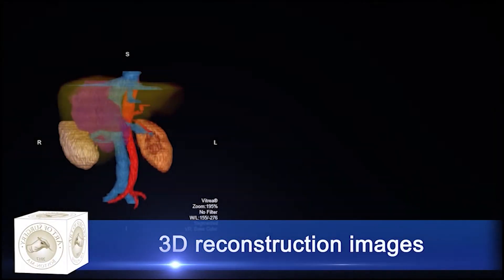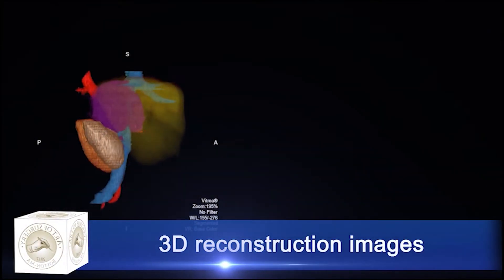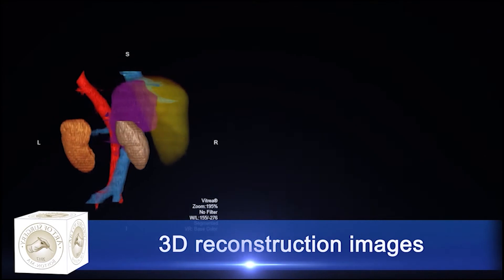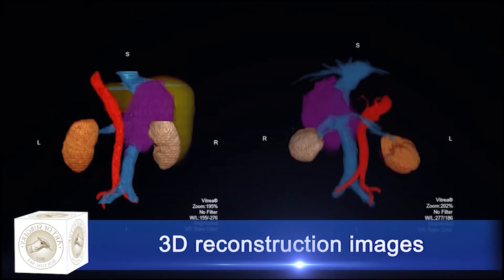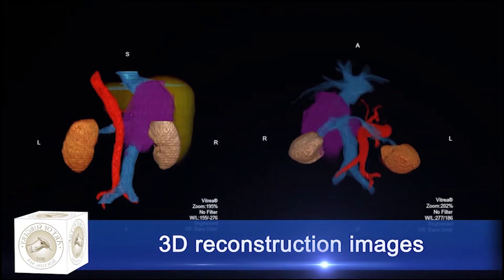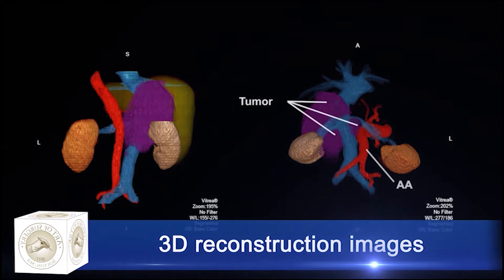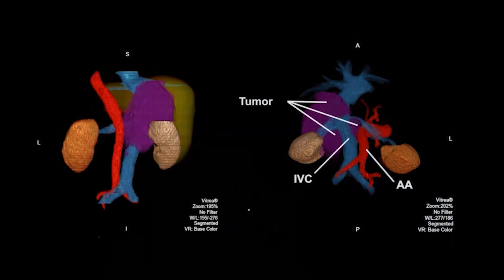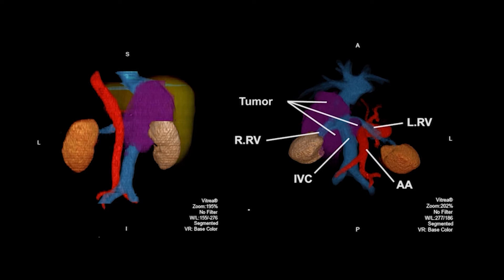The 3D reconstruction was performed and demonstrated the relationship between the tumor, right and left kidney veins, IVC, aorta, and liver. Due to the proximity of the tumor to all those vital structures, surgeons used the 3D model and designed four surgery plans for this case.